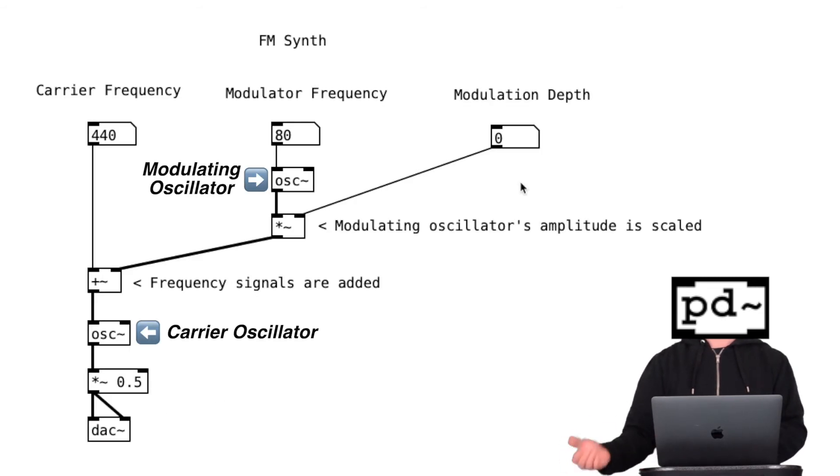This is FM Synth in its most basic form in Pure Data. And please experiment with the three parameters: Carrier frequency, modulator frequency, and depth. So that you can hear what each of them does in terms of how the sound is affected.